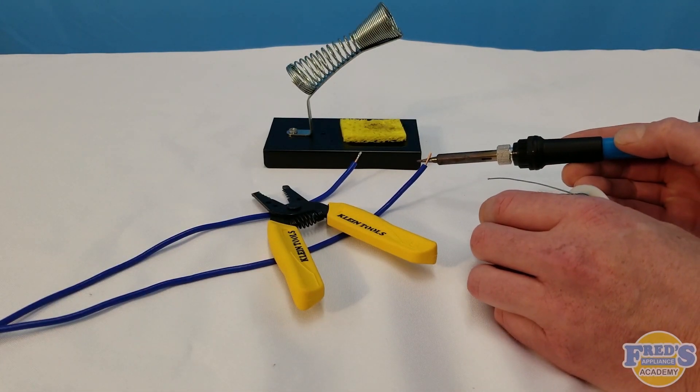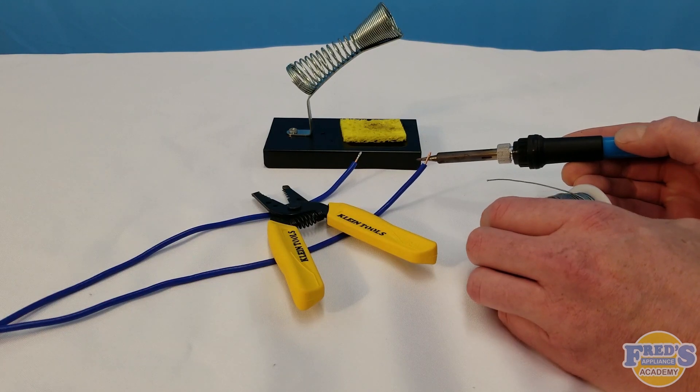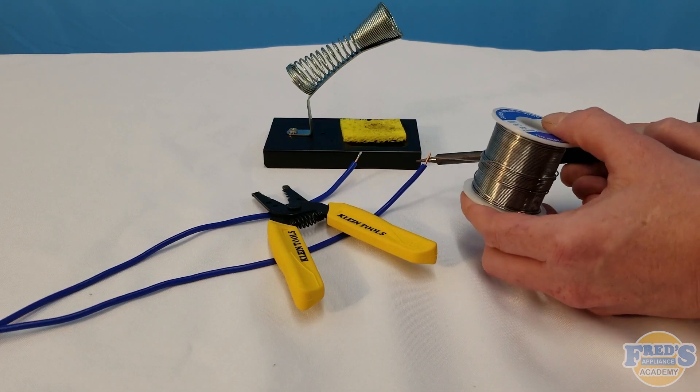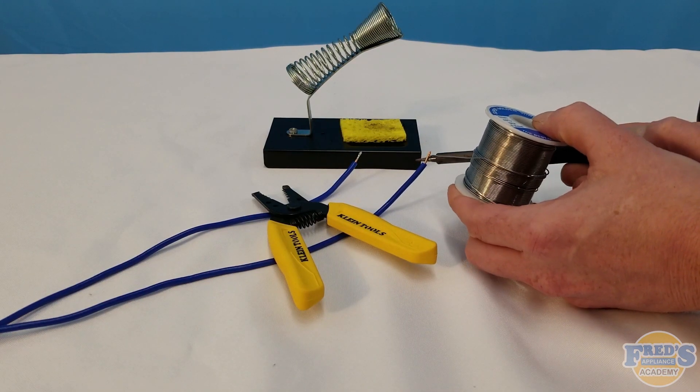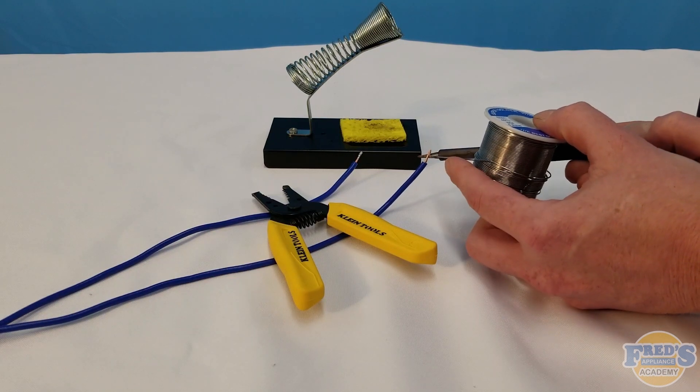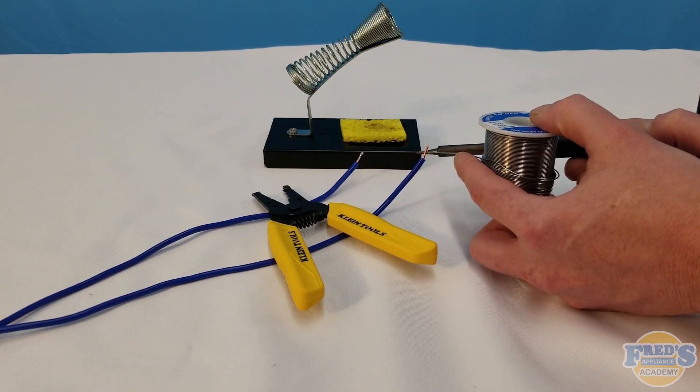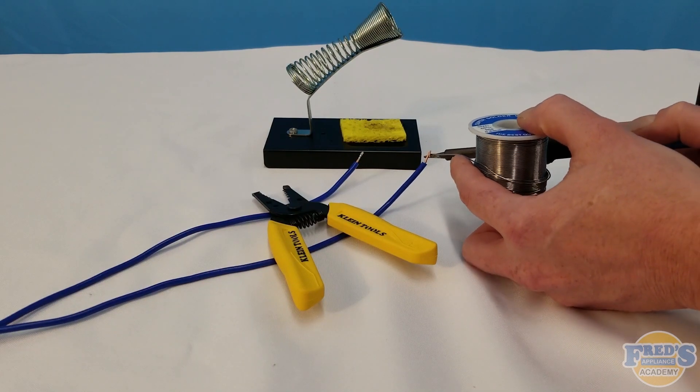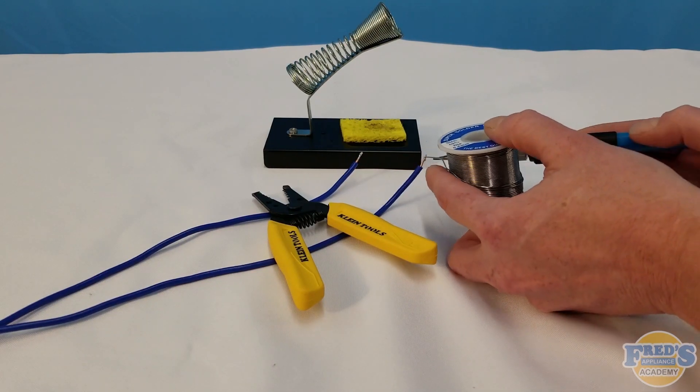I did mention that I was using rosin core solder which does not require a flux because the flux is actually inside of the solder. It also helps to put the solder directly on the needle of the gun as opposed to the copper. This just helps the solder melt a little bit quicker and run into the copper.